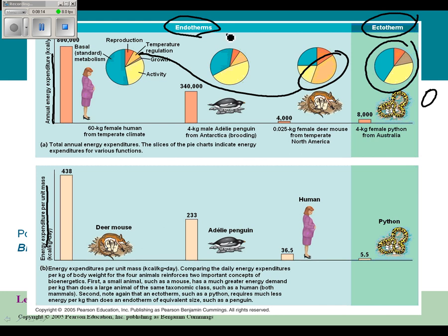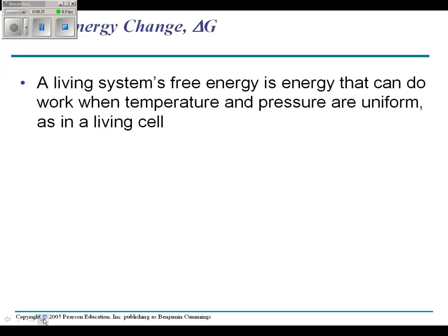Two different strategies for body temperature: endotherm and ectotherm as an example of energy use. Now we're going to get into a little bit of a more difficult topic, and that's the idea of free energy, free energy or delta G. Yes, you have to know delta G.